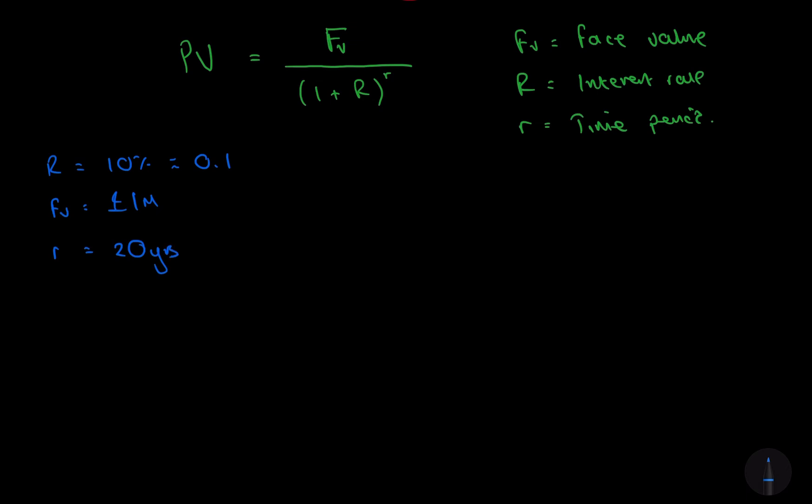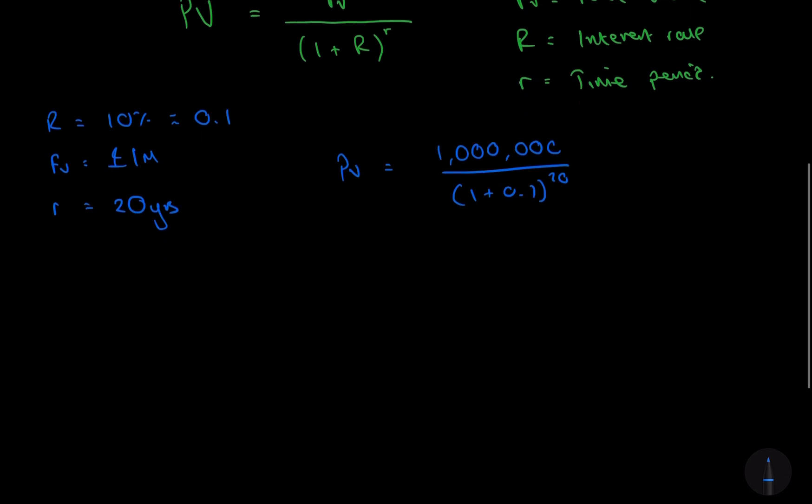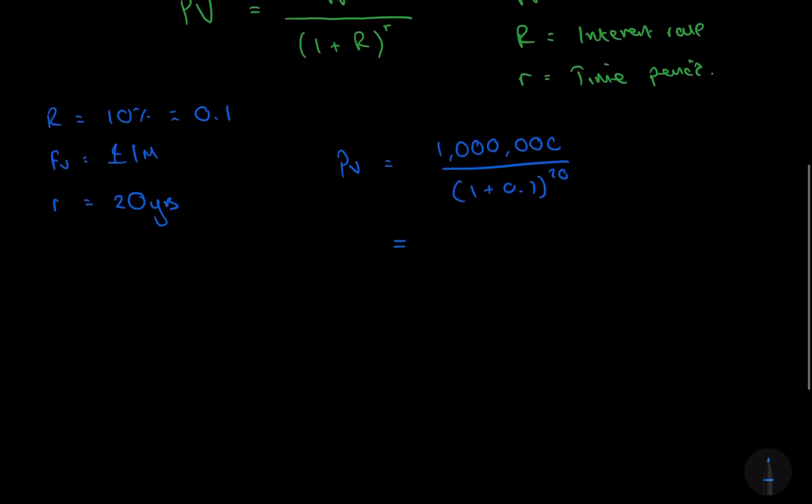Now all we need to do to find the present value of this bond, what it's currently worth today, what we'll do is a future value, £1,000,000, all over 1 plus 0.1, 20 years. And I'll just get my calculator out. This will result in £148,644.